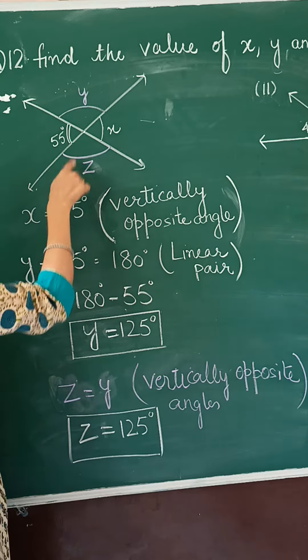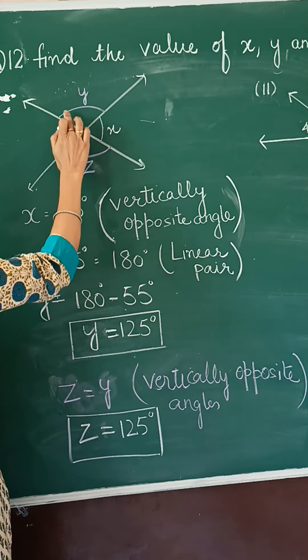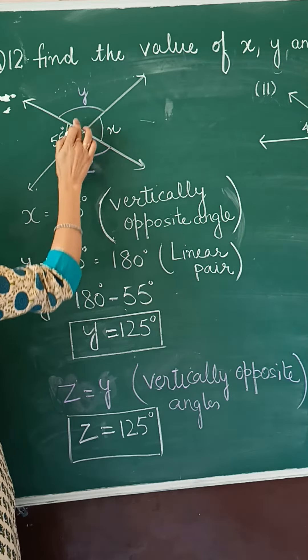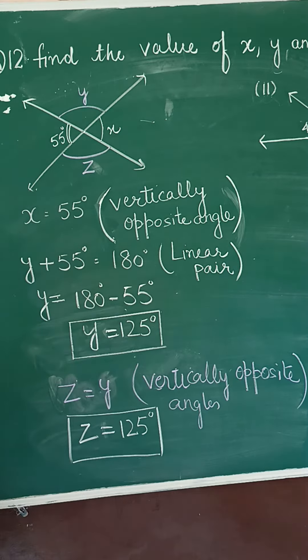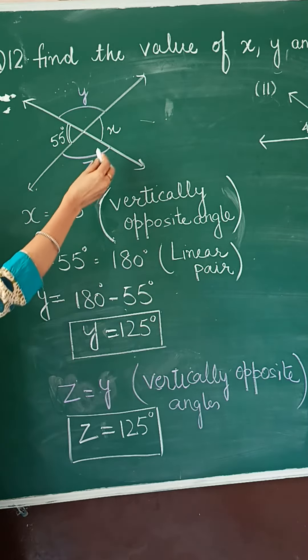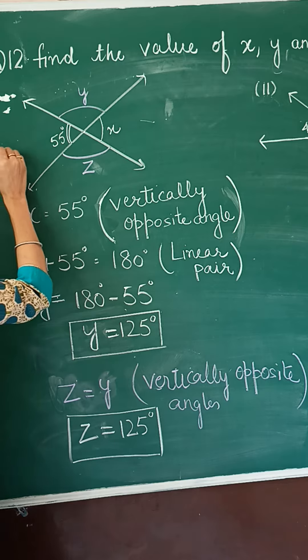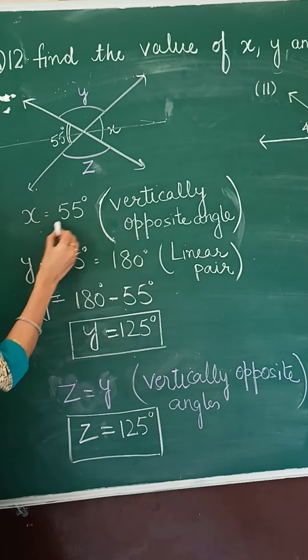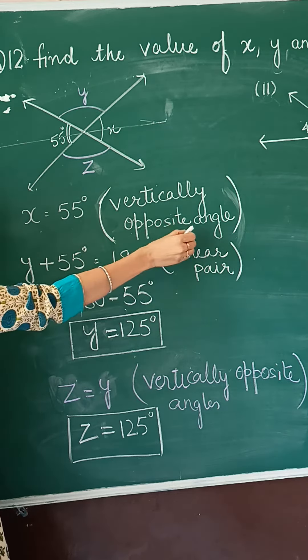Y and z. Here y and z are shown by other color. So they are also vertical opposite angle. Now, vertical opposite angles are equal. So x and 55, they are equal vertical opposite angle.